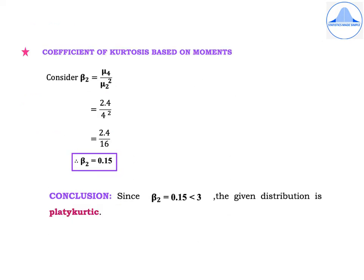Next is the coefficient of kurtosis based on moments. The formula is β2 = μ4 / μ2² = 2.4 / 4² = 2.4 / 16 = 0.15. Since β2 = 0.15 < 3, the given distribution is platycurtic.